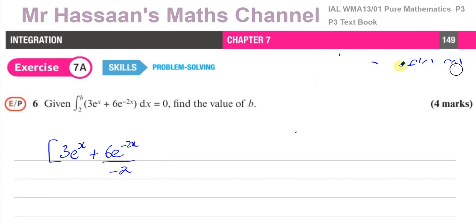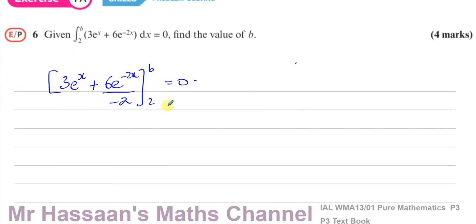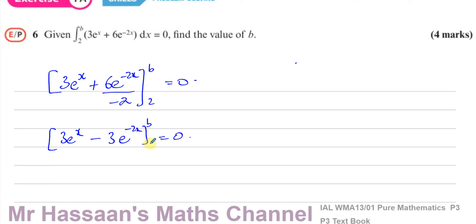We have our limits between b and 2, and that's equal to 0. I can now simplify this to 3e to the power of x minus 3e to the power of minus 2x, equal to 0, between the limits of b and 2.